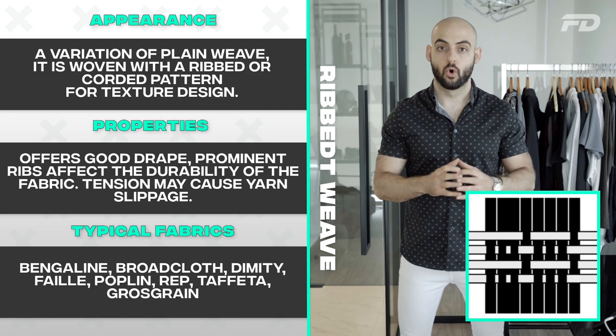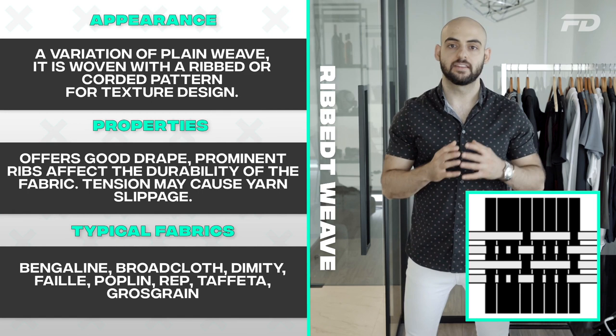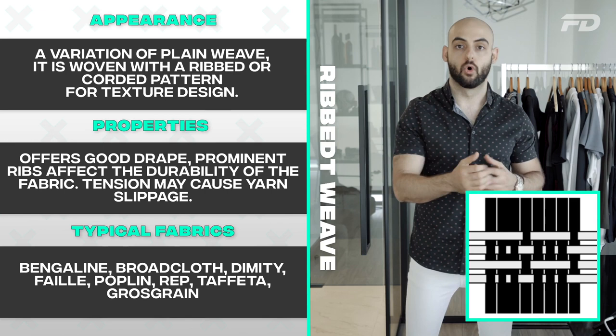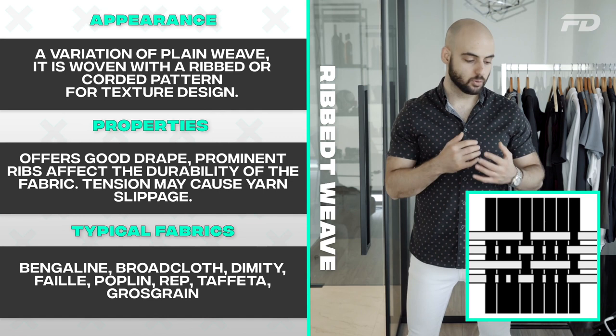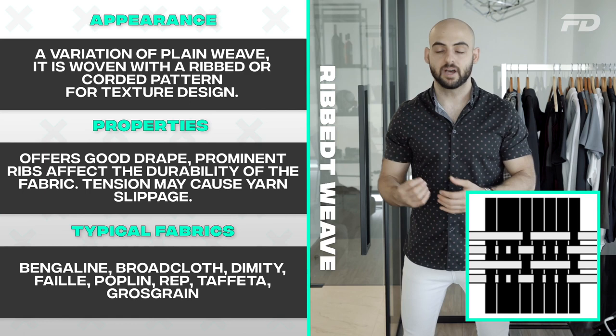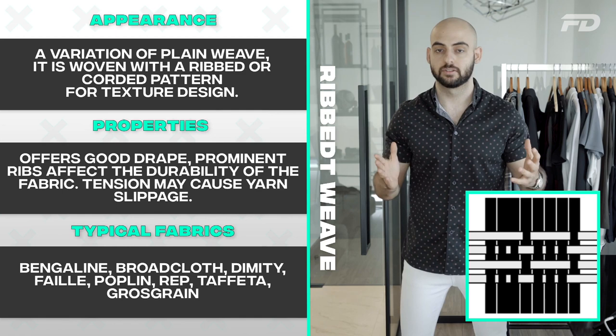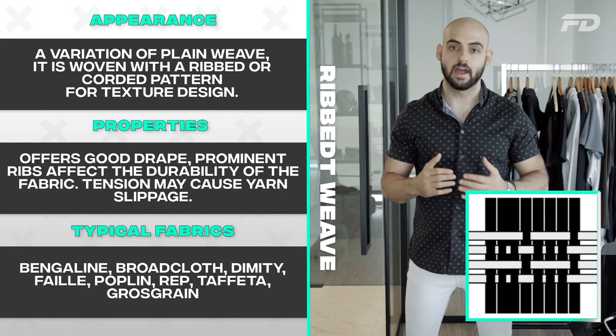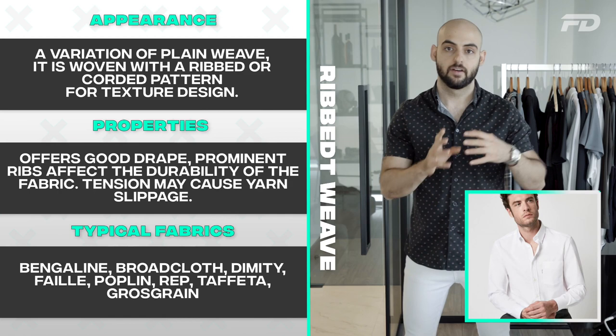The ribbed weave creates the textile's rib-like structure through accent yarns woven in with either the warp or the weft filling yarns. Ribbed weaves typically offer extremely good drape, though depending on how prominent the rib effect is, this can affect the fabric's durability. Excess tension can cause yarn slippage, which can cause the entire textile to unravel. Common fabrics with a ribbed weave structure include bengaline, brocade cloth, poplin, taffeta, and grosgrain.